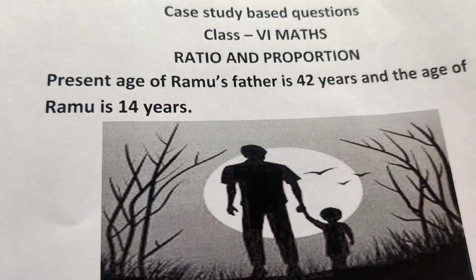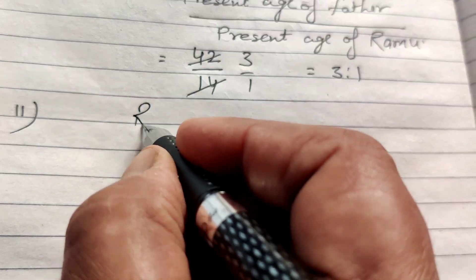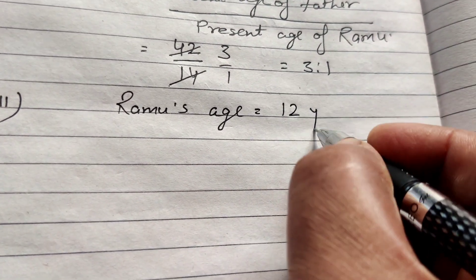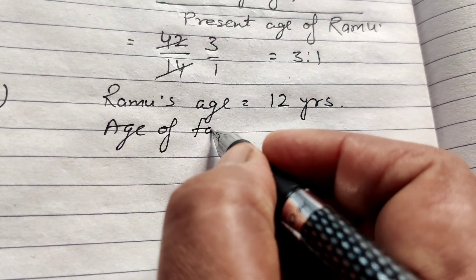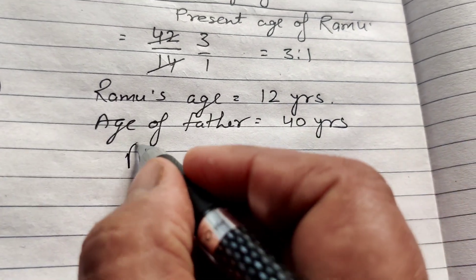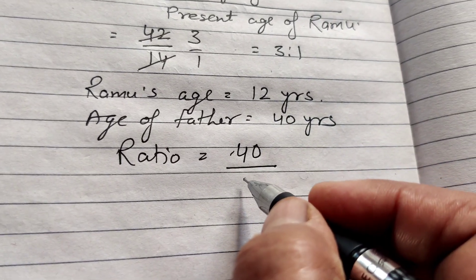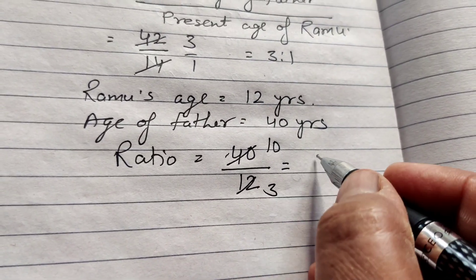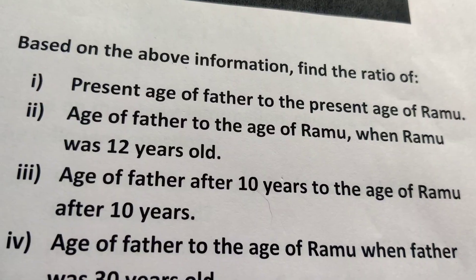So 2 years ago, father's age was 40 and Ramu's age was 12. The ratio is 40 is to 12. Now cancel by 4 — the ratio becomes 10 is to 3.